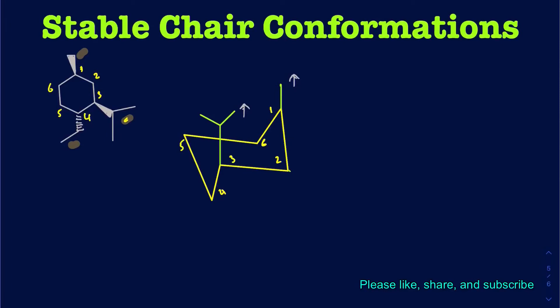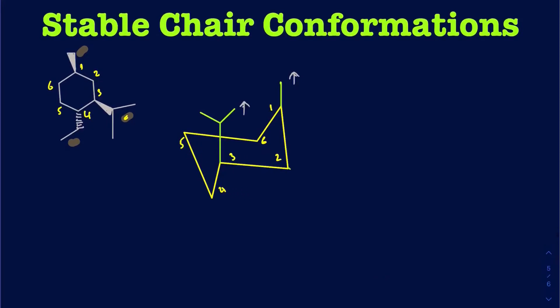On carbon four, I have this ethyl group going back into the page with dash lines. As a result, this ethyl on carbon four should be pointed down. You can also say that the ethyl group and the isopropyl group are trans to one another — if the isopropyl group is coming out of the page, the ethyl group is going back into the page. On the chair conformation, the isopropyl is pointed up, so the ethyl must be pointed down.